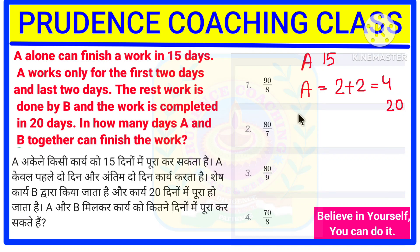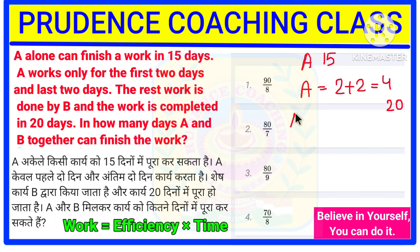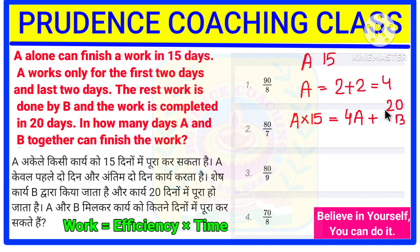We are going to assume that A's efficiency is 'a' and B's efficiency is 'b'. Total work equals A's efficiency multiplied by 15, since A takes 15 days alone. This equals A's 4 days of work plus B's remaining work. Out of 20 total days, A works 4 days, so B works 20 minus 4 equals 16 days.